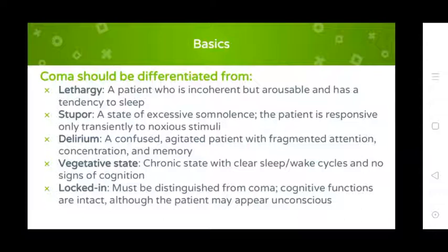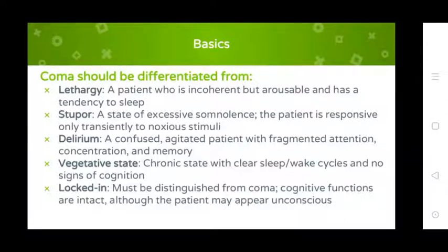Coma should be differentiated from: obtundation, where the patient is incoherent but arousable with a tendency to sleep; stupor, where the patient is responsive only to noxious stimuli; and delirium, a confused state of excessive somnolence with fragmented attention, consciousness, and memory. Vegetative state is a chronic condition with alternating sleep-wake cycles but no signs of cognition.